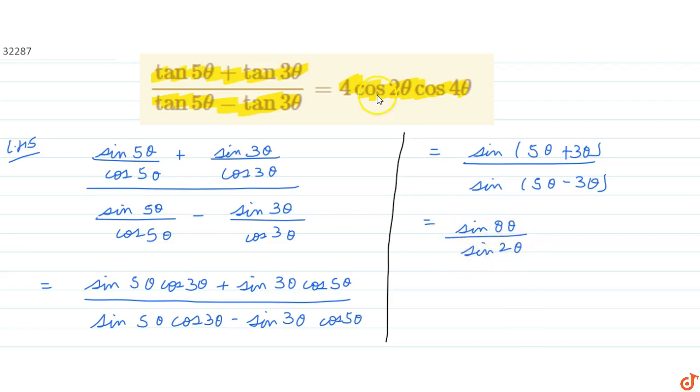Now we know that sin 2a is equals to 2 sin a cos a. So using this formula in the numerator term, what we get is 2 sin 4a cos 4a divided by sin 2a.